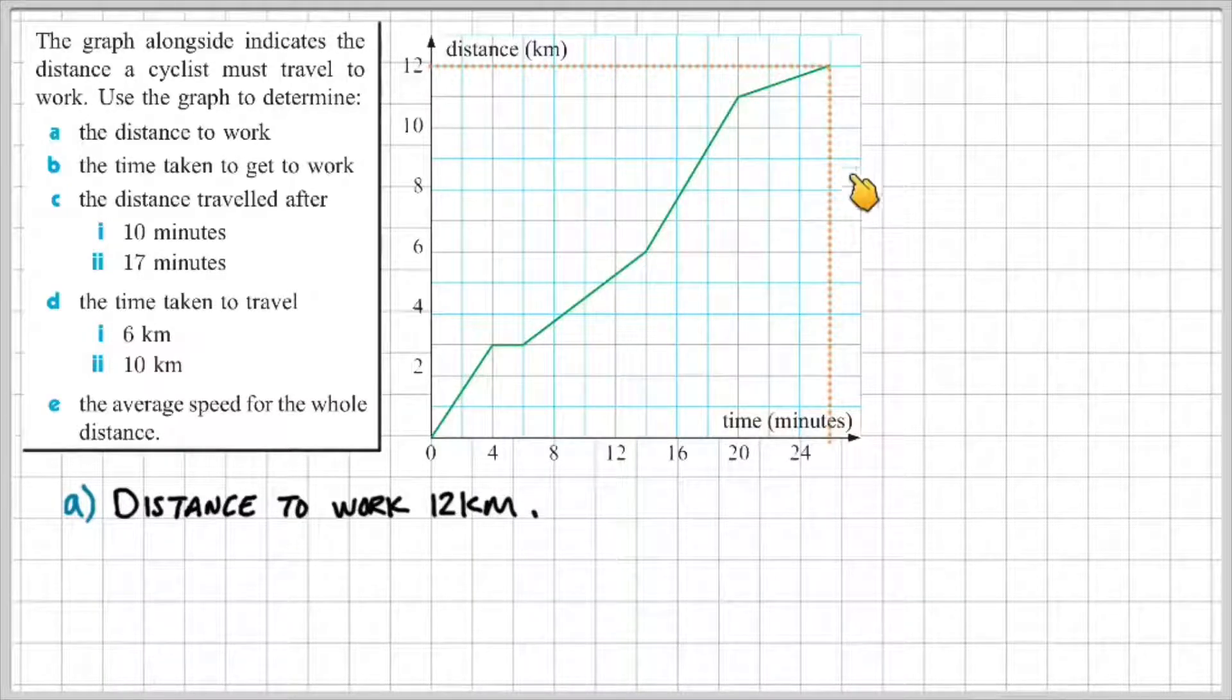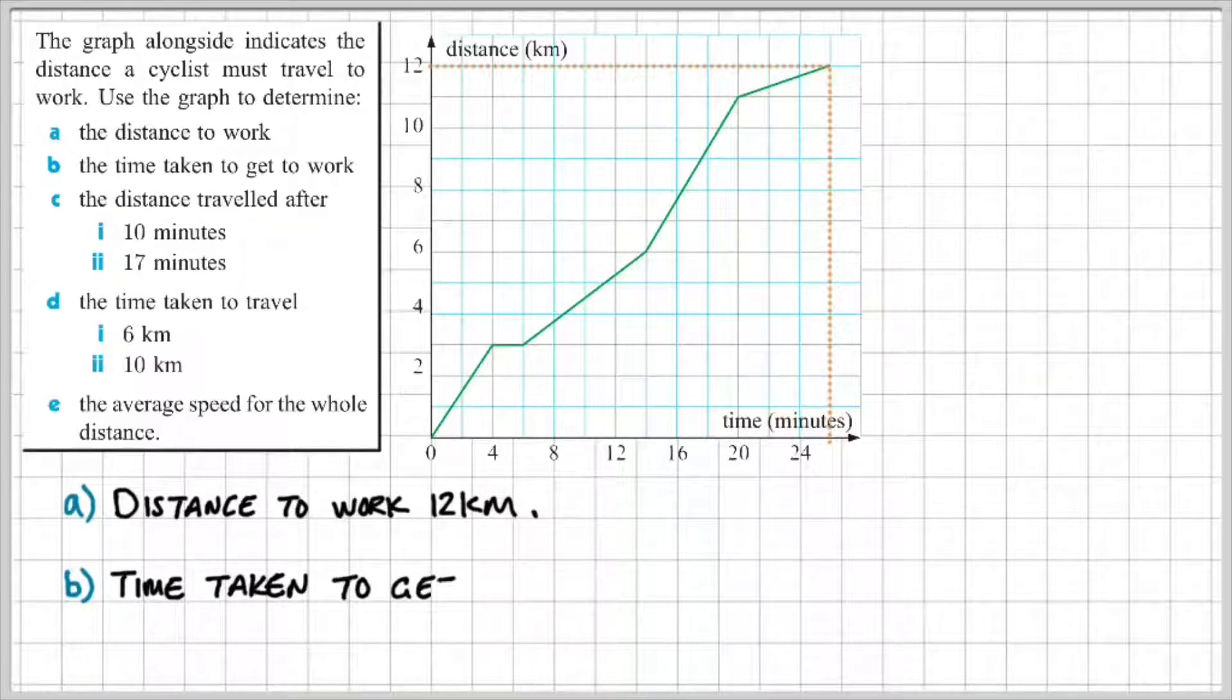Likewise, part B, we can see from the graph that the maximum time is 26 minutes. So then we can say that the time taken to get to work is 26 minutes.